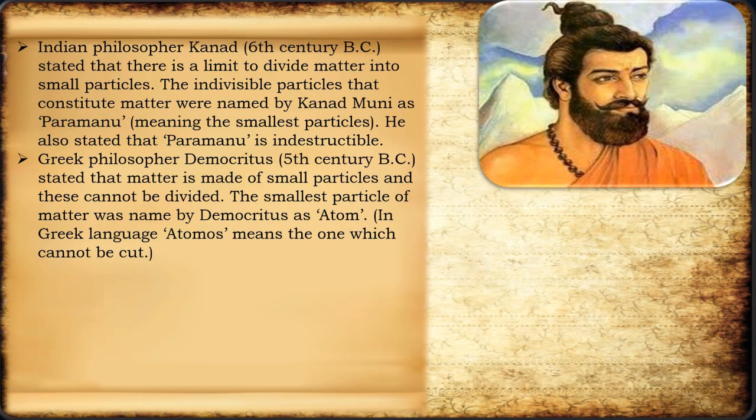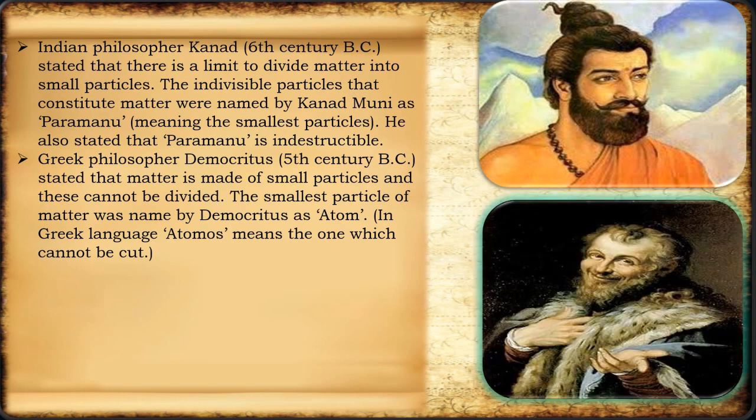Greek philosopher Democritus, during the fifth century, stated that matter is made of small particles which cannot be divided further. The smallest particle of matter was named by Democritus as 'atom.' In the Greek language, 'atomos' means 'the one which cannot be cut.'